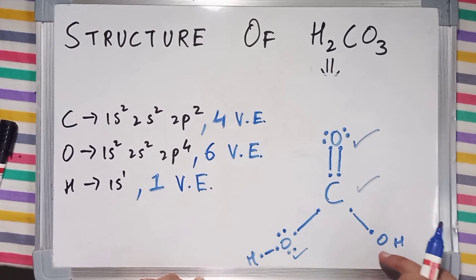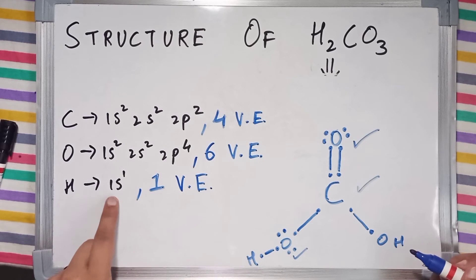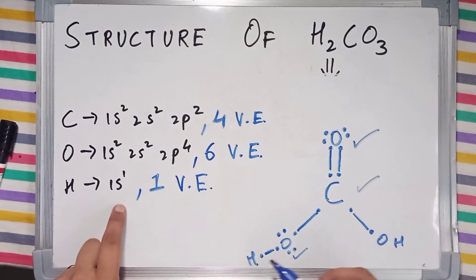Similarly, this oxygen has also completed its octet, whereas these 2 hydrogens have completed their duplet since they just have 1s subshell which can carry a maximum of 2 electrons. This hydrogen has also completed its duplet.